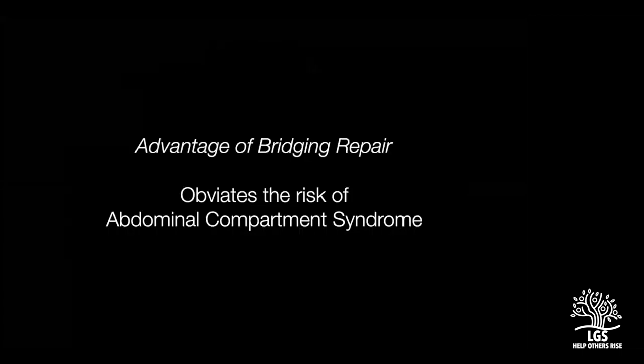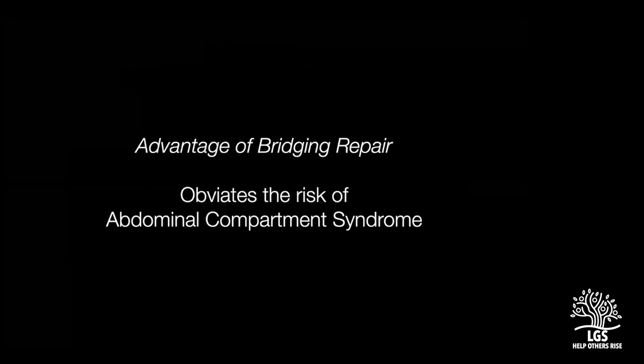The advantage of bridging repair was that since nothing needed to go inside the abdomen — it was only a bridge and the linea alba was not being approximated — there was very little risk of intra-abdominal hypertension and abdominal compartment syndrome. Abdominal compartment syndrome means a rise in intra-abdominal pressure leading to decreased diaphragmatic excursion, respiratory embarrassment, hypoxemia, compression on renal vessels, decreased renal perfusion, and oliguria — causing lung failure and kidney failure.